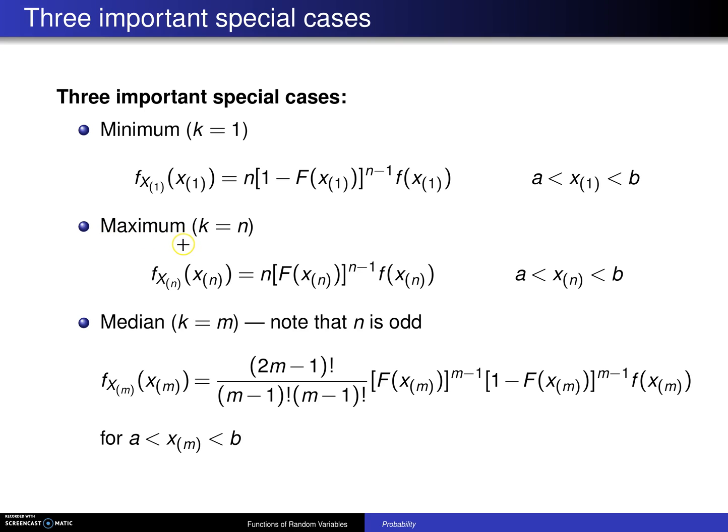The probability density function of the maximum, f sub x of n of x of n, is found by simply plugging into the formula from two slides ago for x sub n between a and b.